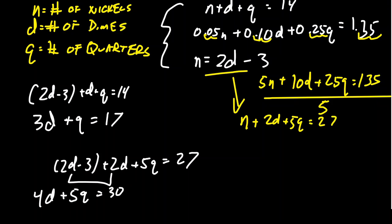So we're going to put these together to make our reduced system of equations. We have 3d plus q equals 17, and we have 4d plus 5q equals 30.